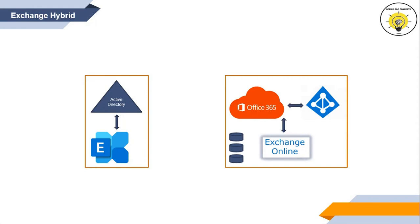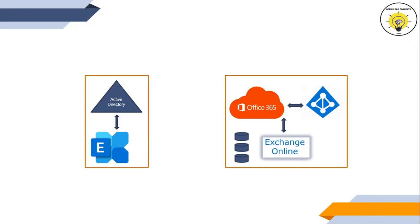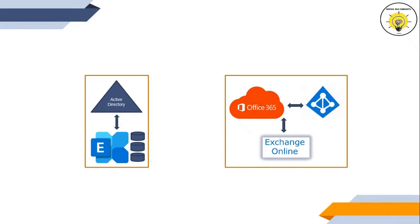We can use one of these migration types to move on-premise mailboxes to Exchange Online. You can perform cutover or staged migration if you want to move completely to Office 365 and decommission on-premise servers. But if you want to use both on-premise and Exchange Online, or host some mailboxes on-premise and some in Exchange Online, you can configure Exchange Hybrid, which lets an organization leverage the features of both.